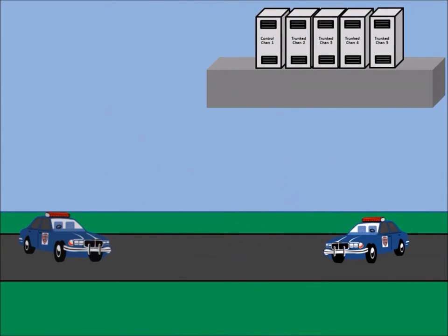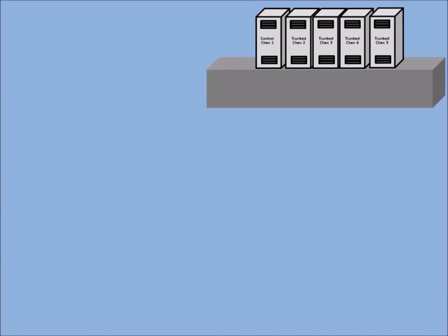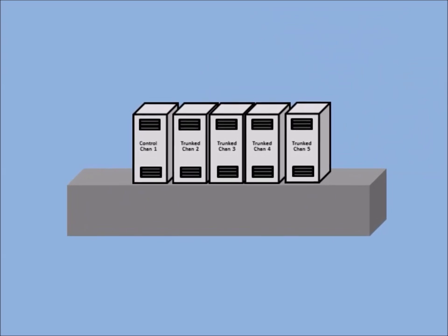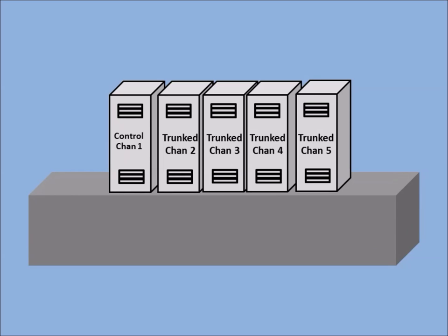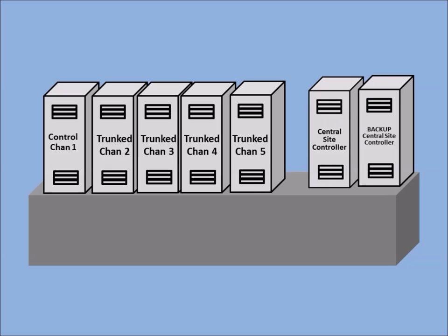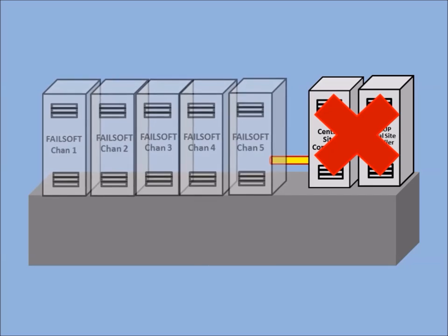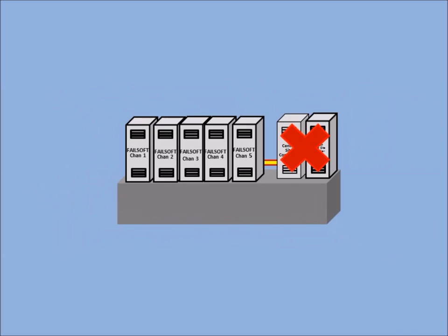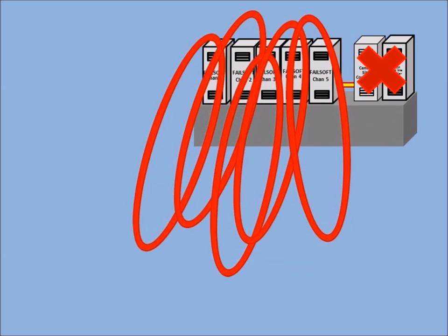A centralized trunk system determines channel assignment through the use of a site controller, which is critical to operation and usually has a redundant backup. The central site controller is located near the base station equipment, selects which station is a control channel, monitors stations for receive activity, and places defective stations out of service. If both the main and redundant controllers fail, the working trunked base stations resort to a failure mode known as failsoft, putting each base station into standalone operation similar to a conventional repeater.